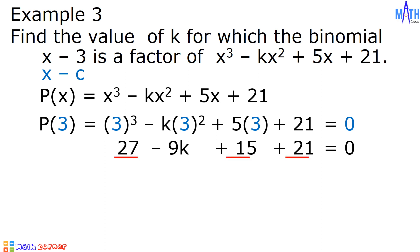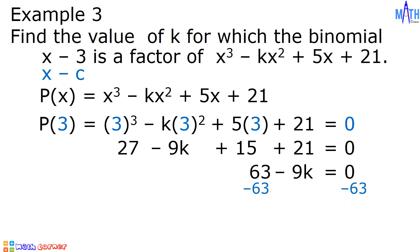27 plus 15 plus 21 is equal to 63. And we have 63 minus 9k equals 0. We need to isolate negative 9k by adding negative 63 to both sides of this equation. 63 plus negative 63 is equal to 0. 0 minus 9k is equal to negative 9k. 0 plus negative 63 is equal to negative 63.